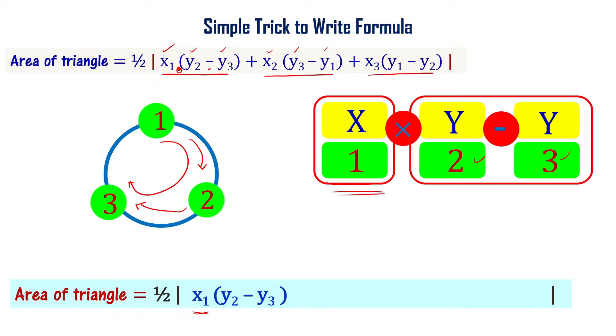Now, let us start with 2. Starting with 2, you get x₂ times (y₃ minus y₁). Now, I will be starting with 3: x₃ plus x₃ into (y₁ minus y₂). Understood?